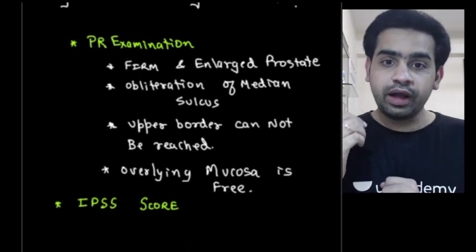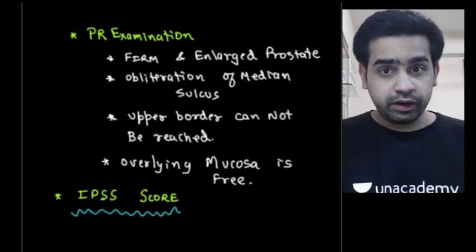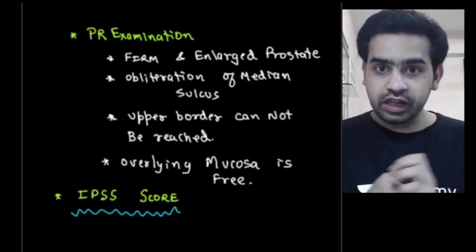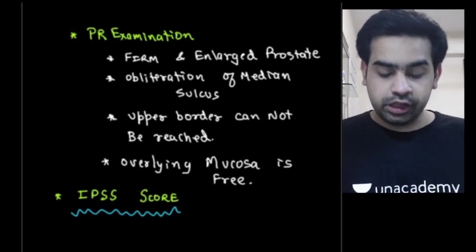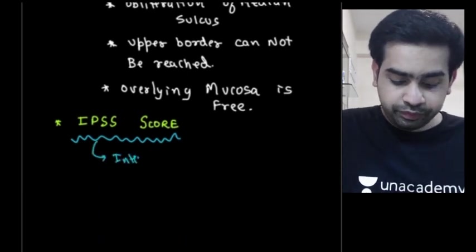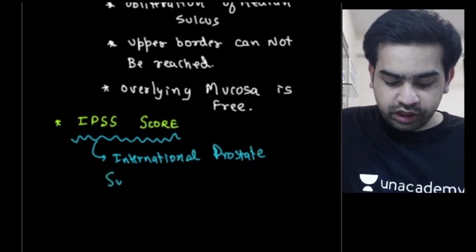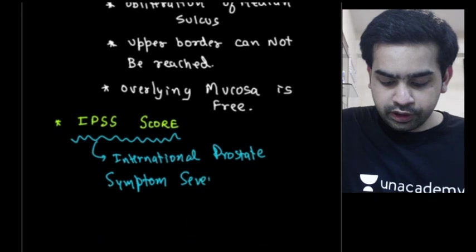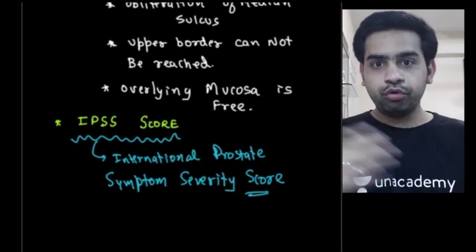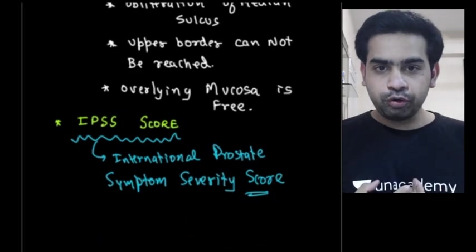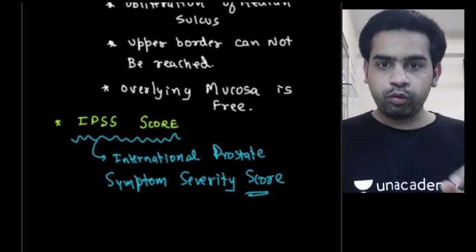After the per rectal examination, you ask the patient to fill up a score sheet — the IPSS. The IPSS is the International Prostate Symptom Severity Score. It is basically a questionnaire, similar to a feedback form, where the patient grades their experience. There are seven questions related to symptoms such as incomplete emptying, frequency, intermittency, urgency, weak stream, straining, and nocturia.